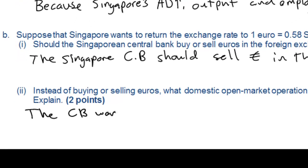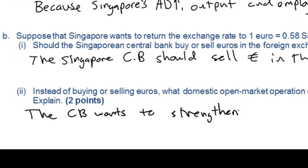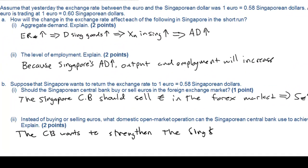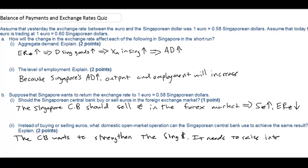Now what if the central bank wanted to use monetary policy instead of intervention? The central bank would essentially want to strengthen the Singapore dollar to bring it back to a stronger exchange rate against the euro. Therefore the central bank would need to raise interest rates for which it must sell government bonds on the open market.